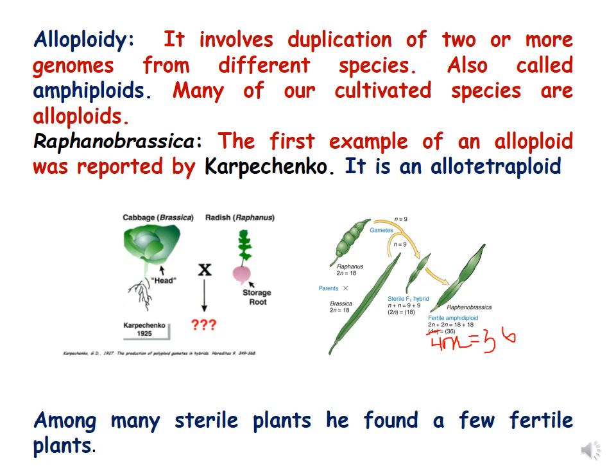If we see how it was developed — it was developed when a cross was done between cabbage and radish, with the objective that the hybrid would have the head of cabbage and the roots of radish. Karpechenko did this cross with that idea. When he did this hybridization, he got a hybrid, but the results were unexpected — opposite to what he expected. Instead of the head of cabbage, he got leaves of radish and roots of cabbage.